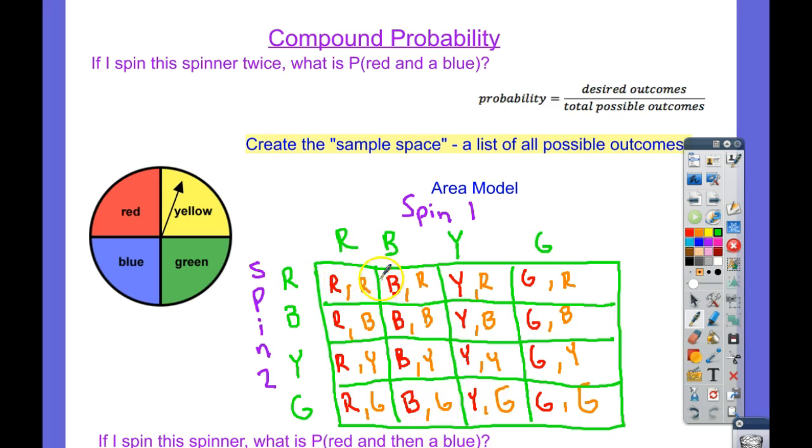A red and a red, a blue and a red, yellow and a red, green and a red. Red and a blue, blue and a blue, yellow and a blue, green and a blue. This is every single possibility that could happen.